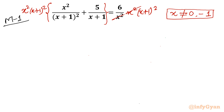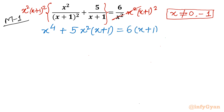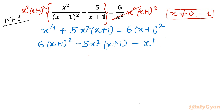After cancellation, we expand. The first term gives x⁴ (since (x+1)² cancels and x²·x² = x⁴). Then we have 5x²(x+1) on the left, and the right-hand side becomes 6(x+1)². Rearranging everything to the right-hand side: 6(x+1)² − 5x²(x+1) − x⁴ = 0.